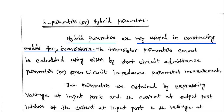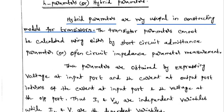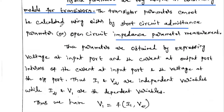In order to analyze transistor-based circuits like amplifiers, oscillators, tuned amplifiers, and so on, we use this hybrid model. The transistor parameters cannot be calculated either by short-circuit admittance or open-circuit impedance parameters, so we must use the H-parameter model.